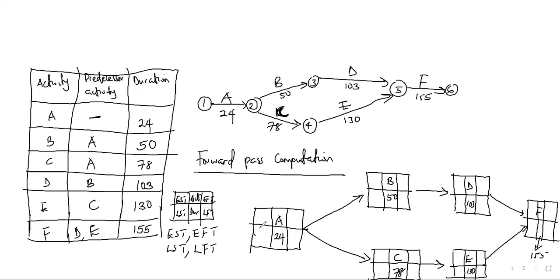What is the earliest start time at the beginning of the activity? Zero — it is zero. Thank you. So we are moving in the forward direction. We are going to add the earliest start time plus the duration to give us the earliest finish time. For A it is zero plus 24, which gives us 24. Because B and C are both attached to A.